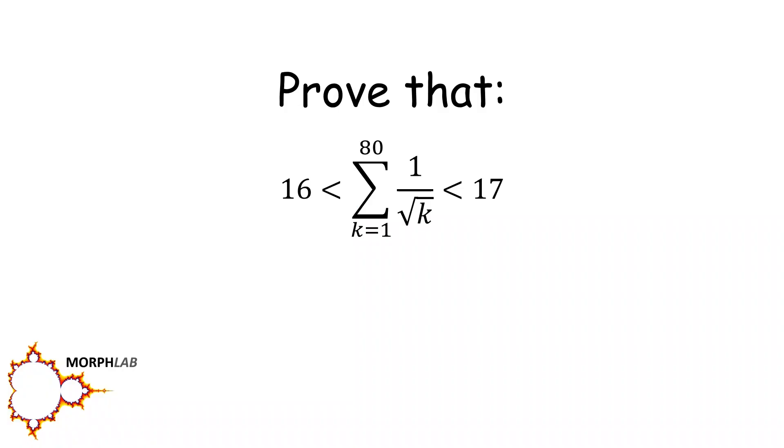Today we want to prove that the summation of 1 over root k from 1 to 80 is between 16 and 17.